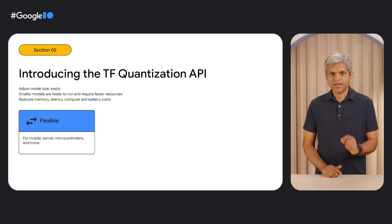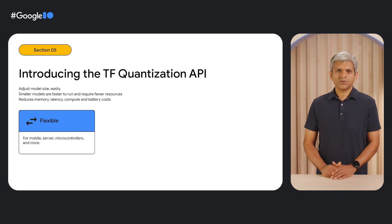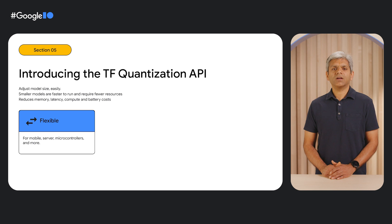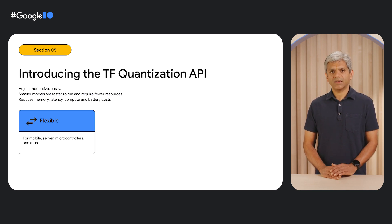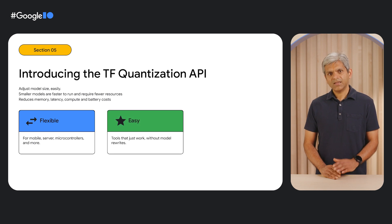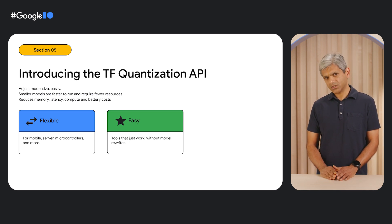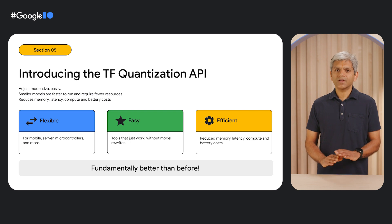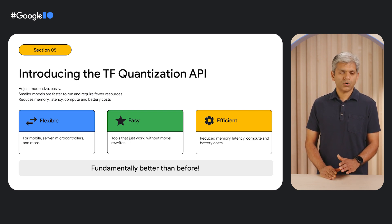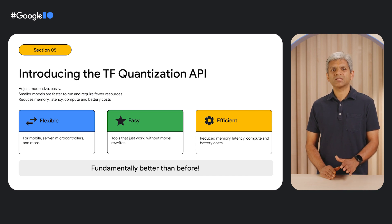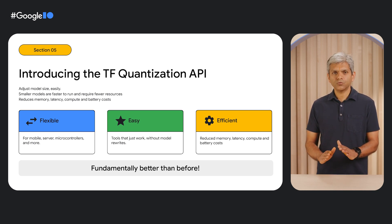First, it's more flexible. While our previous version was limited to mobile and required using TF Lite, this API enables quantization everywhere — including server, mobile, embedded, etc. Second, it's easier: it works right out of the box with simple configurations requiring no changes to model code whatsoever. Third, it's also more efficient, giving you the power to quantize per layer, per op, or even per tensor, to build in a way that works best for you.